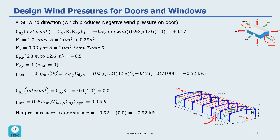To calculate external wind pressure, we need to calculate CFIG external, which equals CPE times KA times KCE times KL. Because the door is located in the zone of 1H to 2H, CPE is negative 0.5. KA is 0.93, taken from table 5 by interpolation because our area is 20 square meters. KCE is 1 because internal pressure is 0, and KL is 1 because the area is 20 square meters, larger than 0.25A squared. As a result, CFIG is negative 0.47.